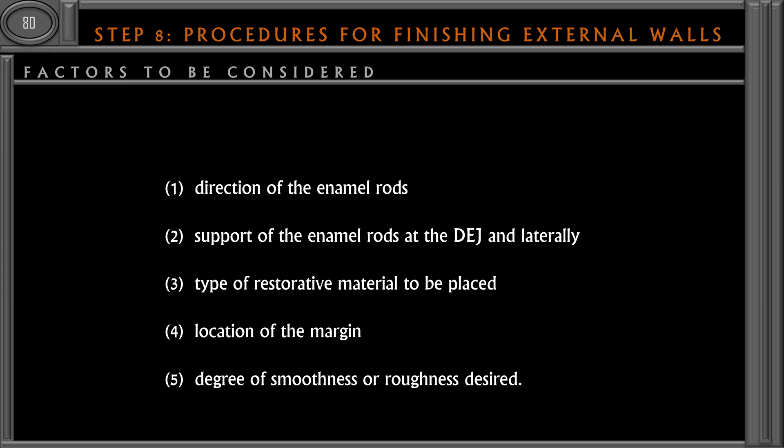There are certain factors to consider while finishing the external walls. First is the direction of the enamel rods. Also important is the support for the enamel rods at the dentinoenamel junction and the lateral surface — otherwise, unsupported enamel will break.